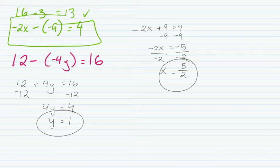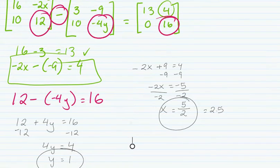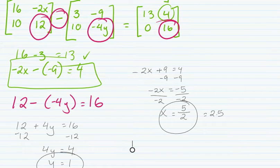So x equals 5 over 2, which as a decimal is 2.5, and y equals 1. That problem combines your scalar multiplication, your subtraction, and solving. Setting up different equations.